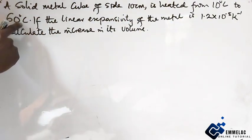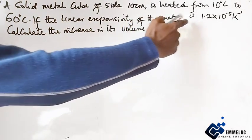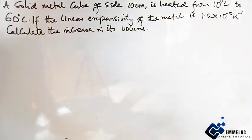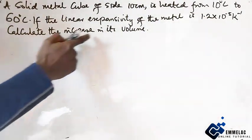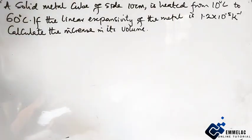If the linear expansivity of the metal is 1.2 times 10 raised to power minus 5 per kelvin, calculate the increase in its volume.